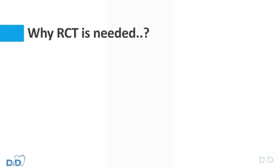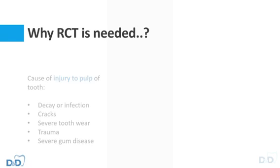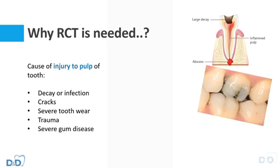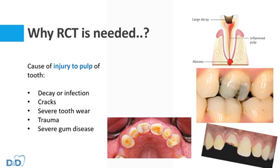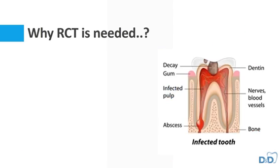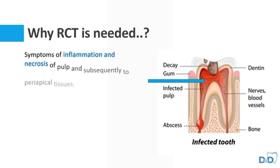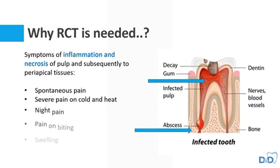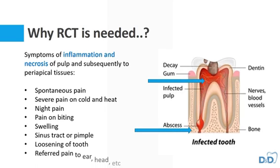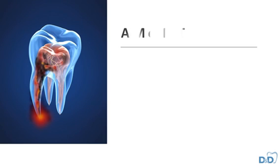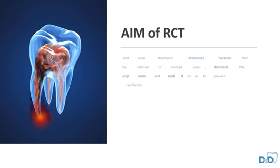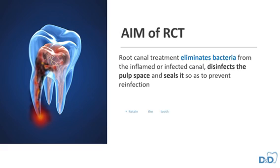Whenever there is injury to the pulp, which can be due to decay, infection, cracks, tooth wear, trauma, or gum disease, it can cause inflammation and necrosis of the pulp, leading to symptoms like pain and swelling. In such cases we advise RCT, which eliminates bacteria from the infected pulp space, disinfects it and seals it, and in such way we can retain the tooth and relieve the pain.